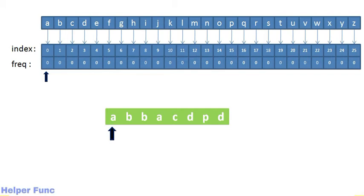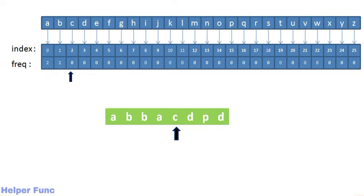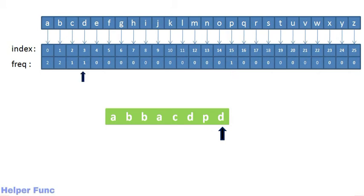Our first character is A, so frequency[0] is incremented to 1. The next character is B, so frequency[1] becomes 1. We encounter B again, so frequency[1] becomes 2. Then A again, so frequency[0] becomes 2. Next is C at index 2, so frequency[2] becomes 1. Then D at index 3, so frequency[3] becomes 1. Next is P at index 15, so frequency[15] becomes 1. Finally D again, so frequency[3] is updated to 2.